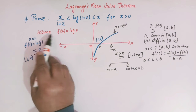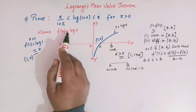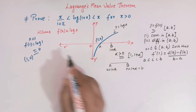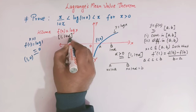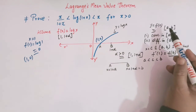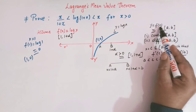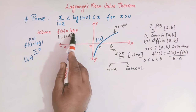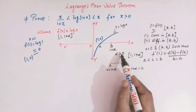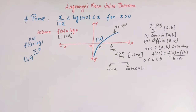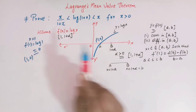We have assumed the function f(x) = log(x), and this function is defined in the interval [1, 1+alpha]. This problem is now analogous to the statement of Lagrange's mean value theorem: f(x) = log(x), with interval [a, b] = [1, 1+alpha], where alpha is greater than 0. Let us now apply Lagrange's mean value theorem to this function.